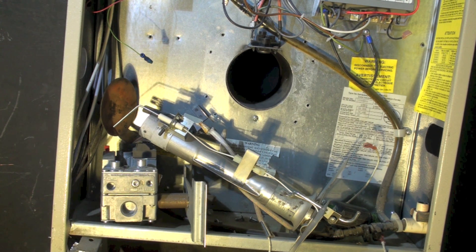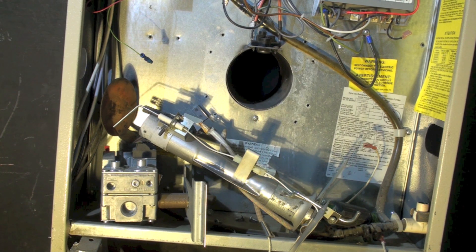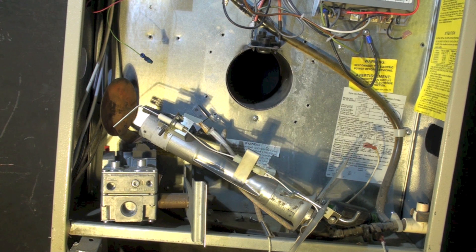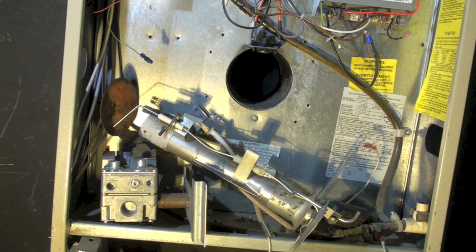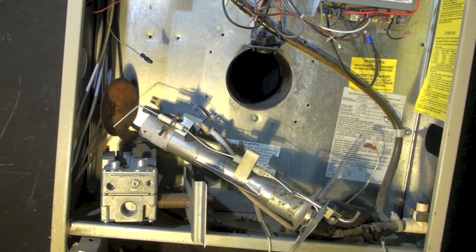Then we're going to look inside here to see what we can see inside the heat exchanger. This is a drum style heat exchanger, so it's just a big tank inside there. There is a secondary heat exchanger because it's a high efficiency furnace, but the drum is still used as the drum heat exchanger.